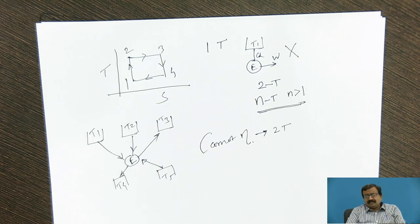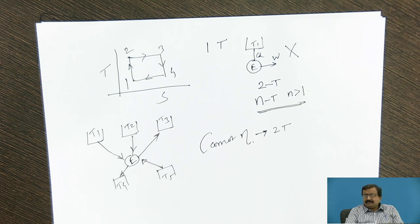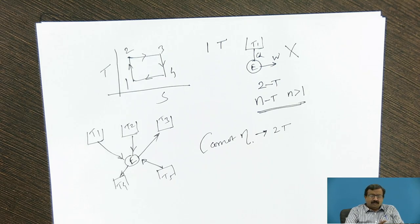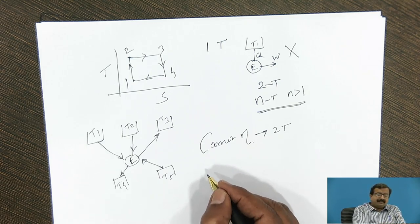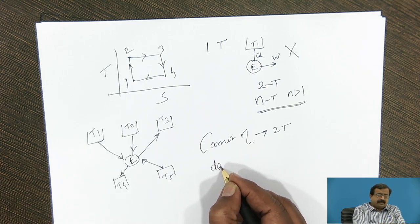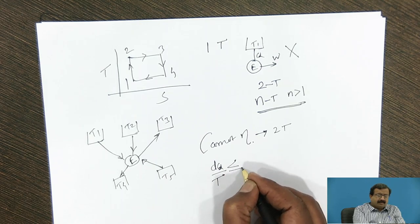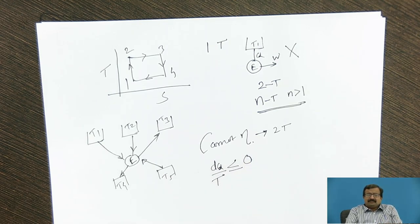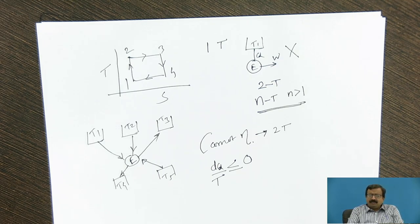Then whether engine works or not, how we can check with Carnot efficiency equation. So there is another very good concept in thermodynamics, which is known as Clausius inequality. Now what is Clausius inequality? Clausius inequality says that integral dQ by T is less than or equal to 0.